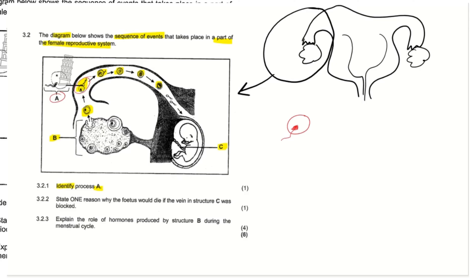Process A involves the ovum coming from the ovaries — whatever comes out from the ovaries is called the ovum or egg cell. This ovum coming out from the ovaries has met a sperm cell. This arrow-like structure is showing a sperm cell. A sperm cell has met an ovum, and whenever they meet, they fuse together to eventually create a baby. That process is called fertilization — the nucleus of the sperm cell enters the nucleus of the ovum and they fuse together to create a zygote.